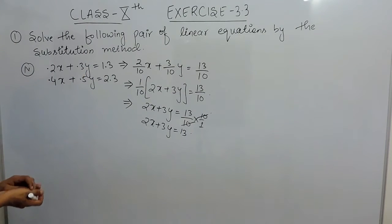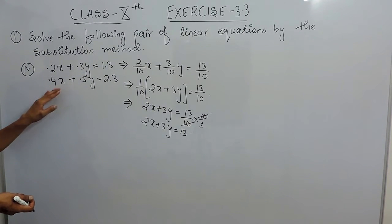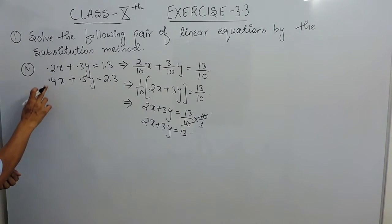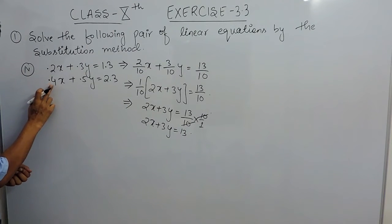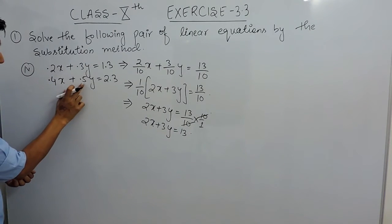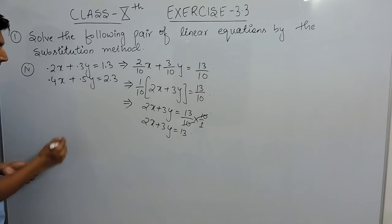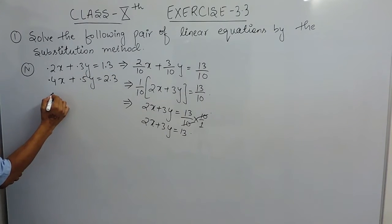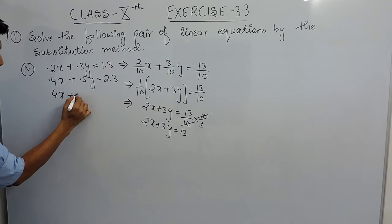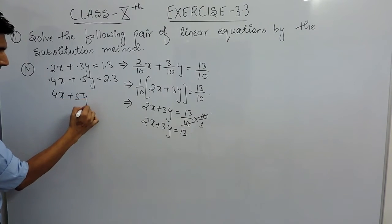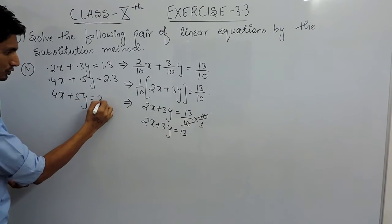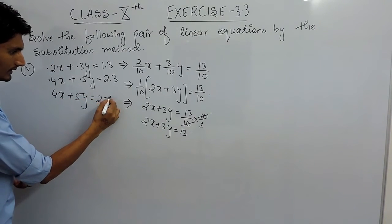Similarly, you can take 10 common from both sides. Because after the decimal there is only 1 digit in each term, all the 10s can be cancelled out. So this equation can be written as 4x plus 5y equals 23.